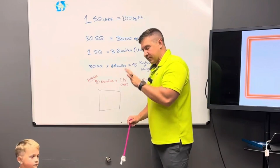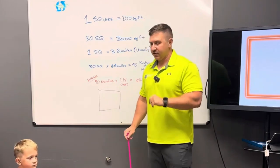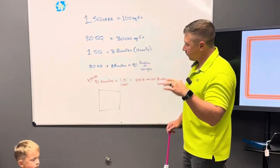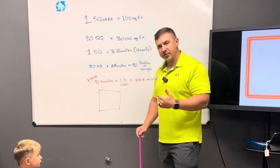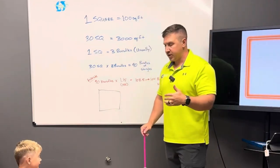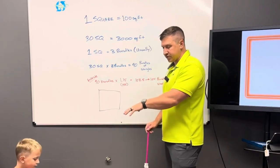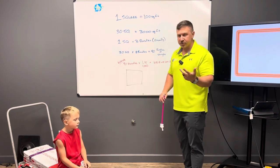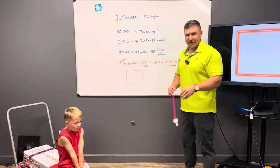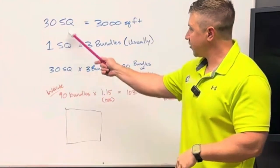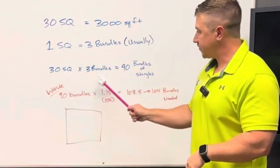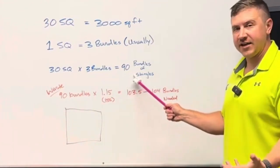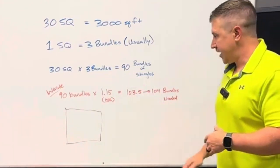For 99% of the roofs out there, it's three bundles per one square. So if we wanted to determine how many bundles of shingles we need — and these are just the field shingles, the shingles you see; this does not include starter or hip and ridge — it's a very simple equation. The same 30-square house times three bundles per square puts us right at 90 bundles of shingles.